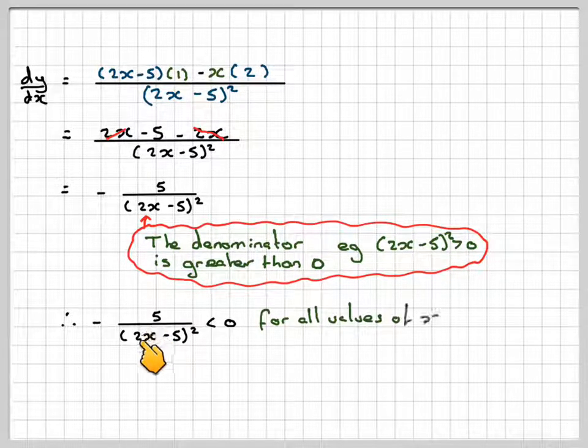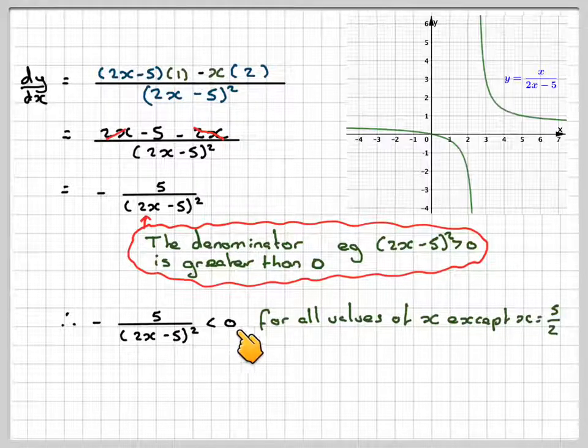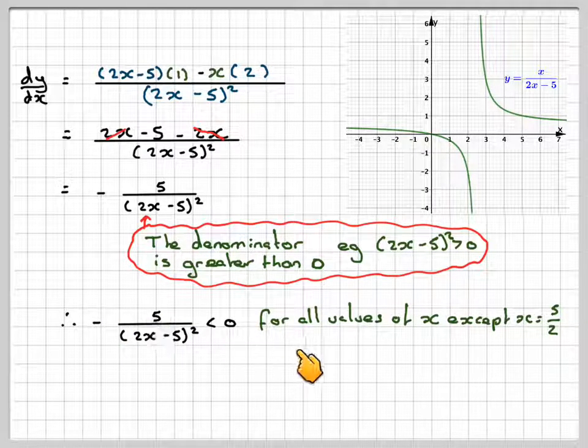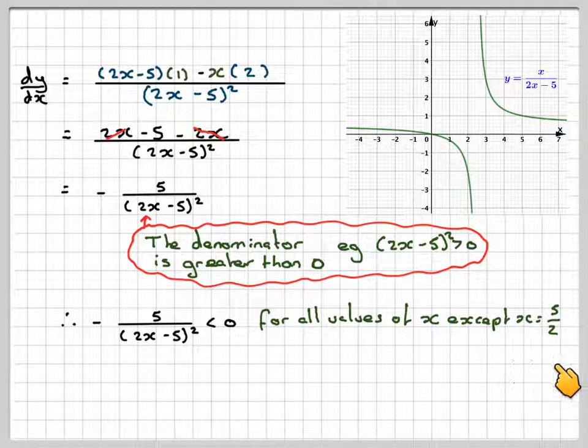Therefore, minus 5 over 2x minus 5 all squared will be less than 0 because it will just be left with minus 5 for all values of x except x equals 5 over 2.